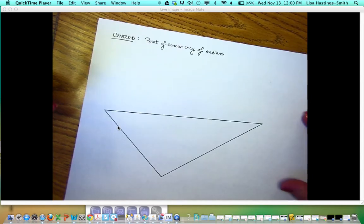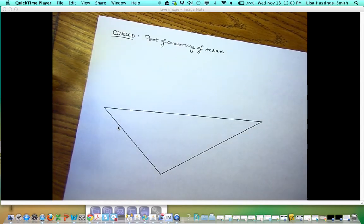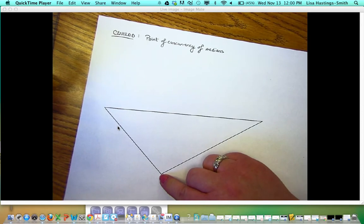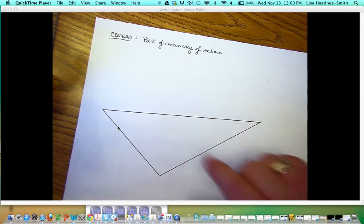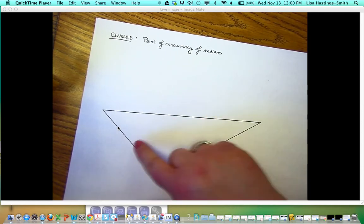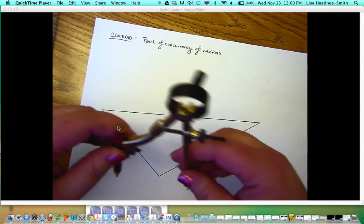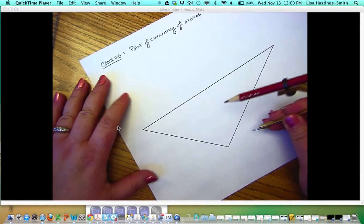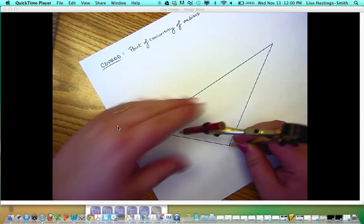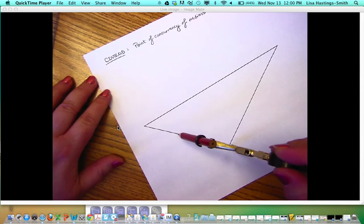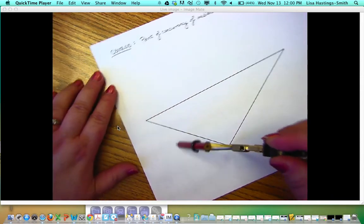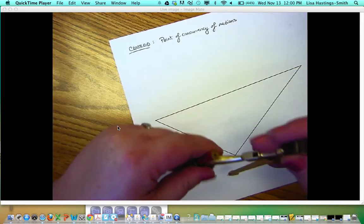We need to remember that a median goes from a vertex to the midpoint of the opposite side. So we need to be able to locate the midpoints of these three sides, and then we're just going to draw the segment from the vertex to that midpoint. That means we need the construction that is a perpendicular bisector construction. So the centroid is going to be the perpendicular bisector construction just to locate the midpoint.